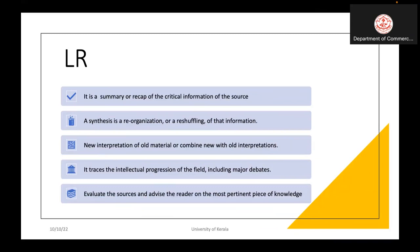So what is a literature review? It is a summary or recap of critical information from the source. We are providing critical information from existing authors and studies to the readers. It is a synthesis — a reorganization or reshuffling of information without losing the original content. Sometimes we give new interpretations of old material or compare new with old interpretations. It raises the intellectual progression of the field, including major debates.